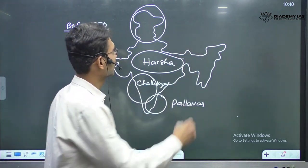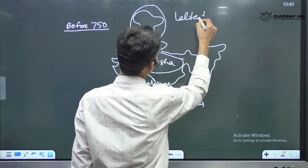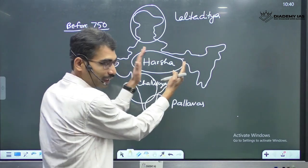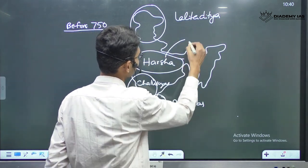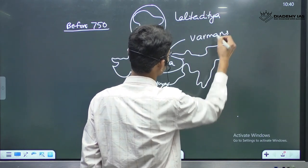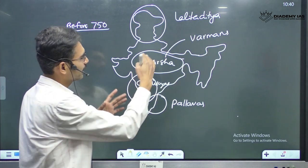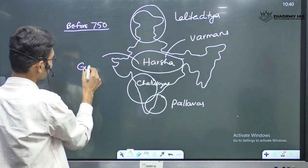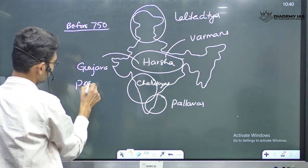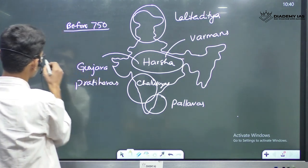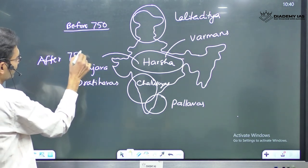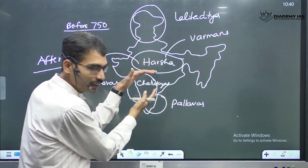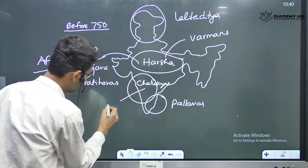One major important ruler was Lalitaditya. When it comes to the Gangetic Valley also, different rulers emerged, like Vermans. And gradually, Vermans were replaced by a different dynasty here — Gurjara Pratiharas. This is the condition after 750 AD. The Chalukyas were replaced by Rashtrakotas.